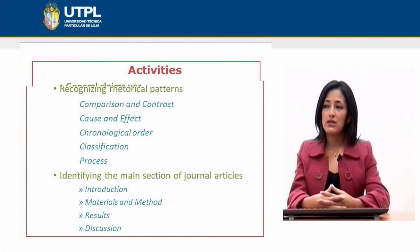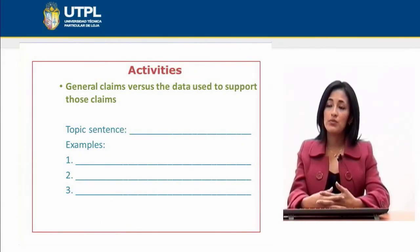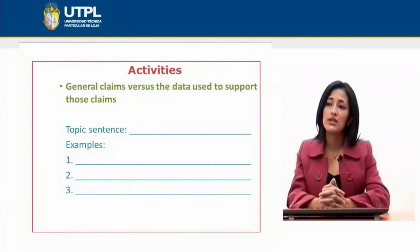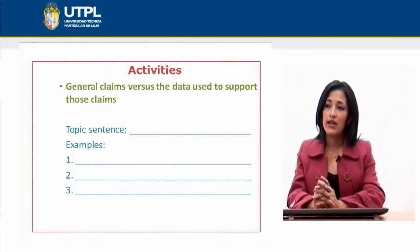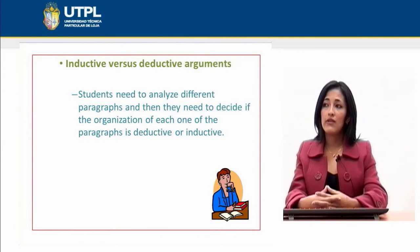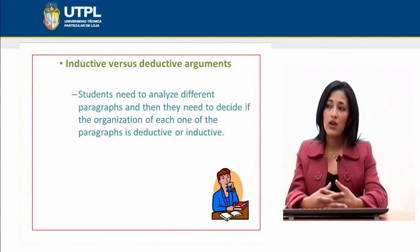We can use different activities in order for our students to recognize the different ways previously analyzed. For example, for general claims versus data used to support those claims, we can provide students with a format that contains a topic sentence and examples — students write the topic sentence they have read and also write the supporting sentences. For inductive versus deductive arguments, students need to analyze different paragraphs and then decide if the organization of each paragraph is deductive or inductive.